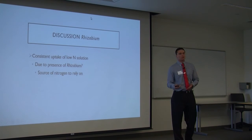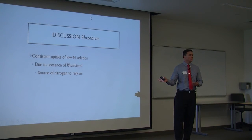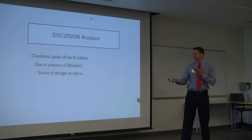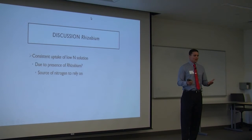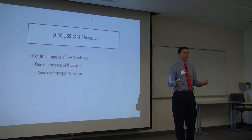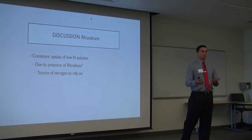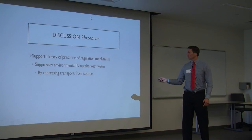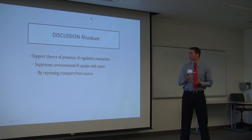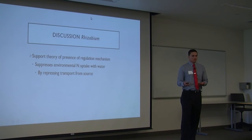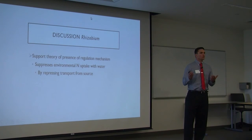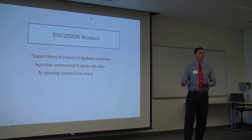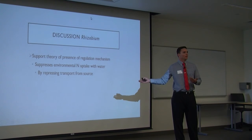For the rhizobium plants, there was a consistent uptake of the low nitrogen solution. This may be because of the presence of rhizobium. With the presence of rhizobium, the plant realizes it has a sufficient source of nitrogen, and they have developed this reliability over time and evolution with the rhizobium organism. This also supports the theory of a presence of a regulation method — with their reliability of the nitrate source, they are able to suppress the environmental nitrogen source and do not take up the environmental high nitrogen source.